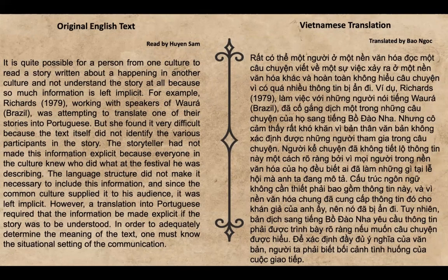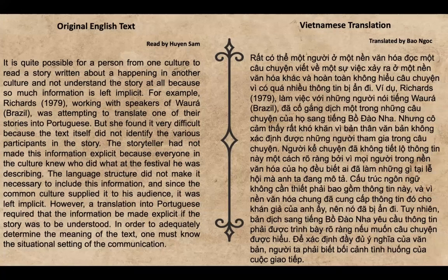It is quite possible for a person from one culture to read a story written about happenings in another culture and not understand the story at all, because so much information is left implicit. For example, Richard (1979), working with speakers of Guara, Brazil, was attempting to translate one of their stories into Portuguese, but found it very difficult because the text itself did not identify the various participants in the story. The storyteller had not made this information explicit because everyone in the culture knew who did what at the festival he was describing. The language structure did not make it necessary to include this information, and since the common culture supplied it to his audience, it was left implicit.